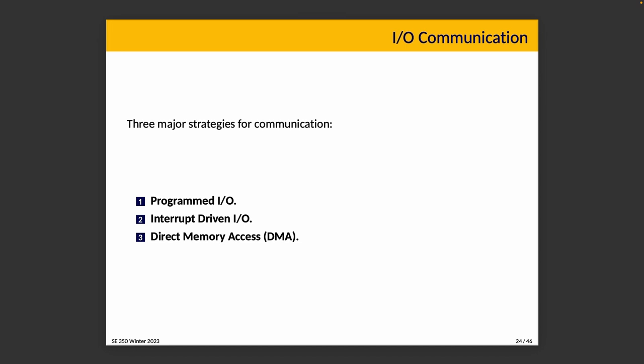The fourth major element of the computer system is IO. There are three major strategies for communication. First is programmed IO — a fancy way of saying polling. The processor issues an IO command and is responsible for checking when the IO operation is complete, usually by looking at a status register that belongs to the IO device or a designated memory location. The IO device updates the status register when it's finished. Polling is a little inefficient, but it is a valid option.